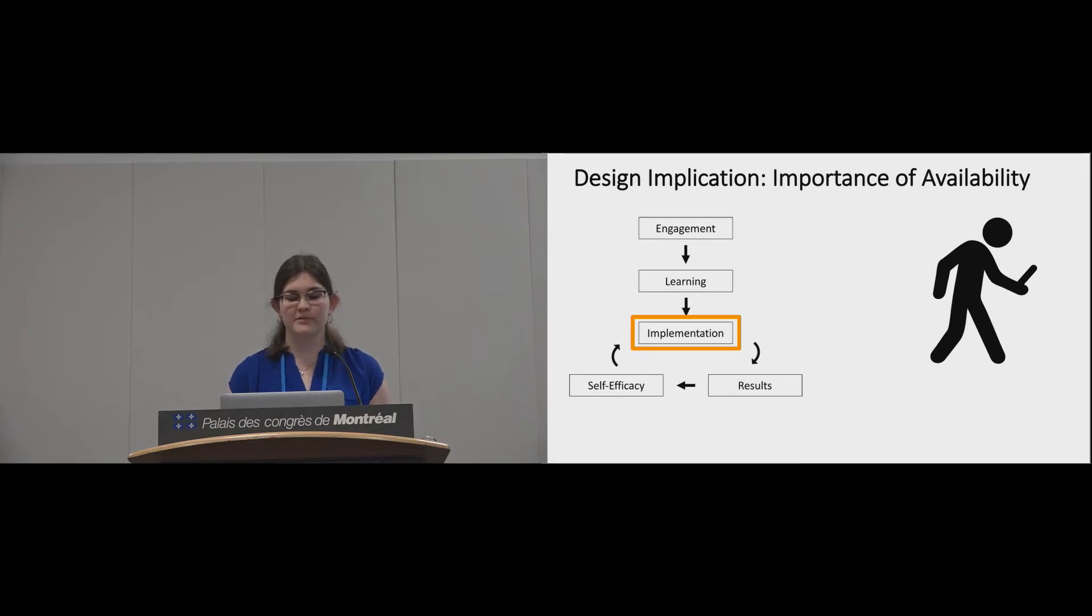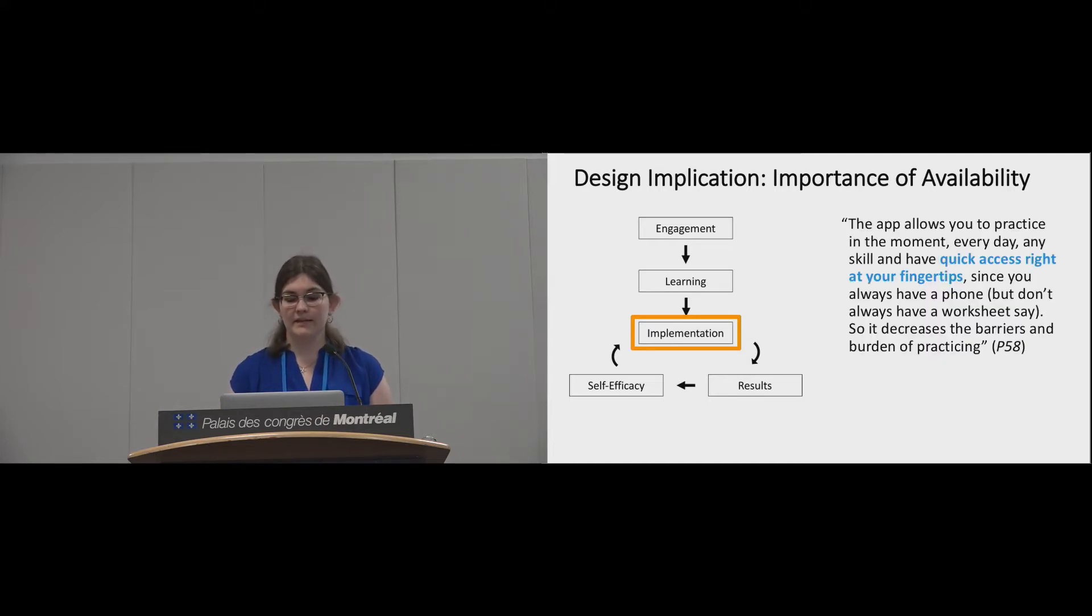One of the reasons participants reported PocketSkills helped with implementation was its availability. As people could access PocketSkills whenever they had their phone and an internet connection, they were able to use it on the go and in the context of their lives whenever they needed it. People felt this availability helped them remember their positive coping skills when they might have otherwise forgotten them. One participant said, the app allows you to practice in the moment, every day, any skill, and have quick access right at your fingertips, since you always have a phone, but don't always have a worksheet. So it decreases the barriers and burden of practicing.